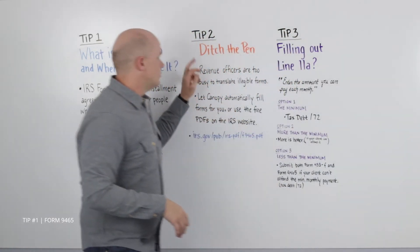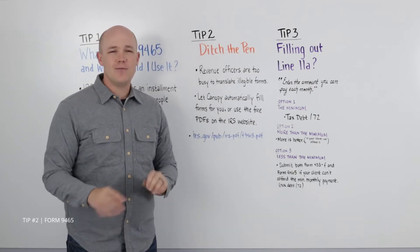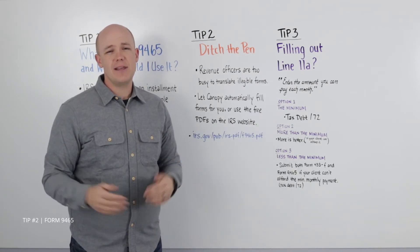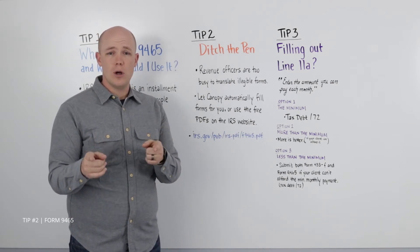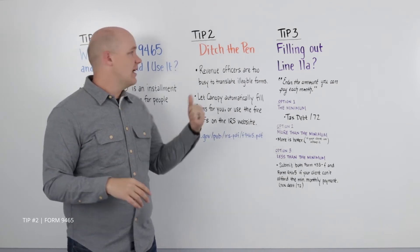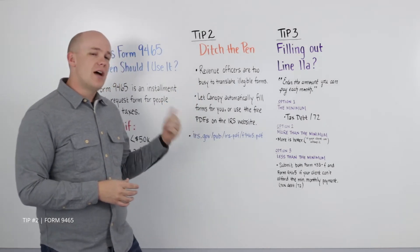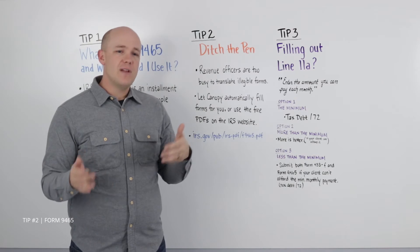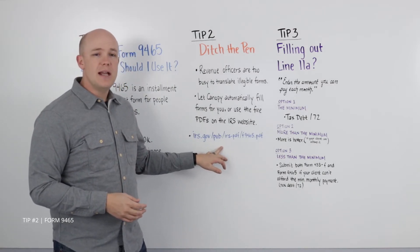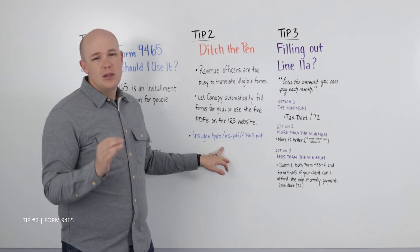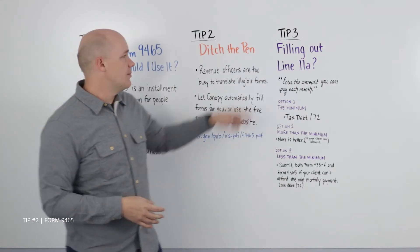Tip number two: ditch the pen. One of the most surefire ways to get any form rejected is to submit something illegible. IRS employees don't have time to figure out if you wrote a 1 or a 7, and if they can't read it, they're likely to reject it. Even if you don't use software like Canopy to automatically fill out your 9465, all of the forms are on the IRS website as editable PDFs that you can fill out right in your browser — no software required.